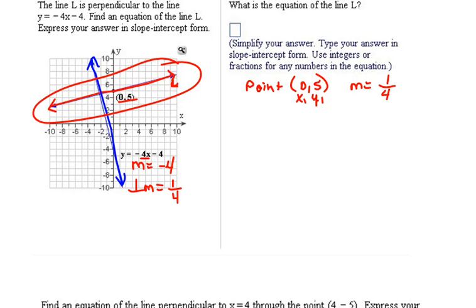And now we can use our equation, which was y minus y1 equals m times x minus x1, and we can fill in what we know. That would be y minus our y1 is 5 equals m, which is the slope, is 1 fourth times x minus the x1 value is 0.